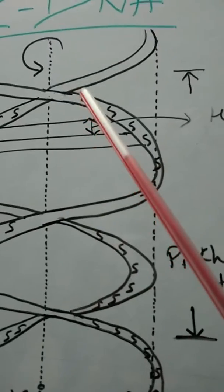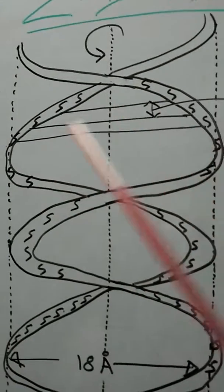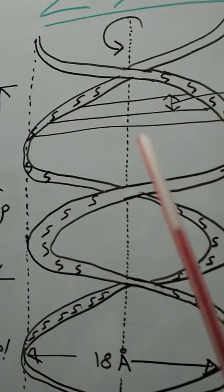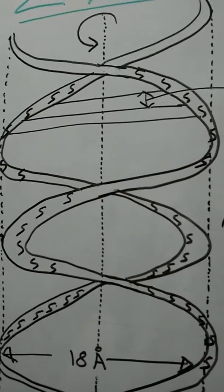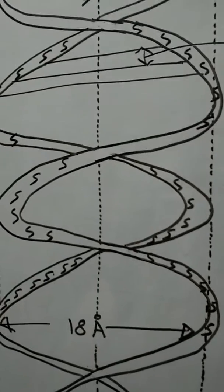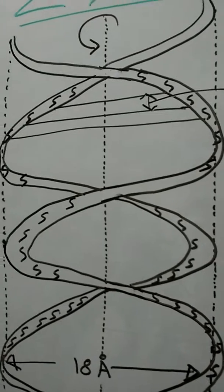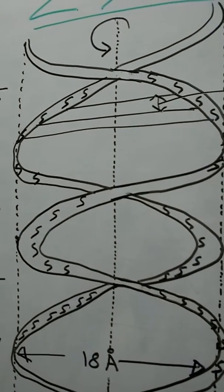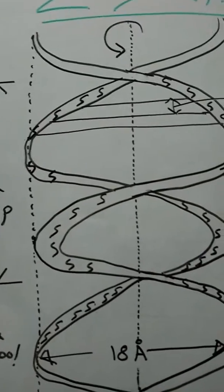So total of 12 sugars in one turn. So basically how many nucleotide pairs? There will be 12 nucleotide pairs or 12 base pairs per turn, but it was 10 in case of B-DNA.